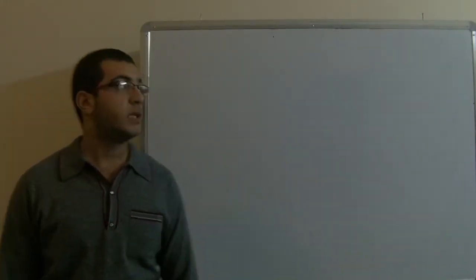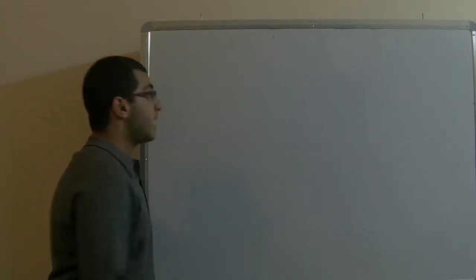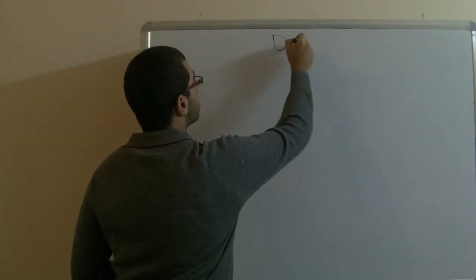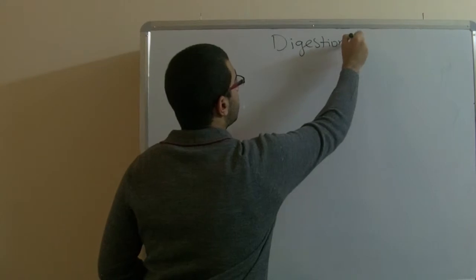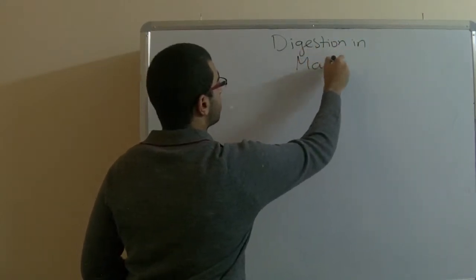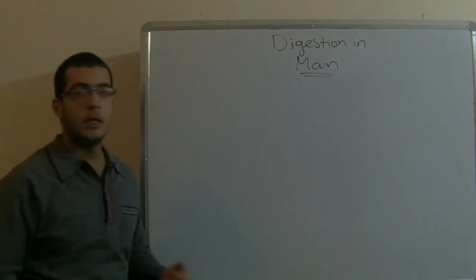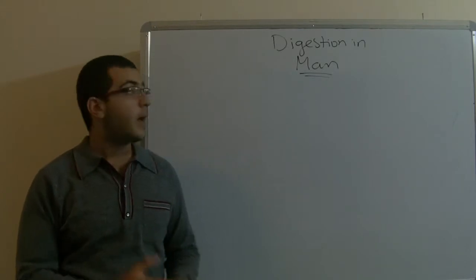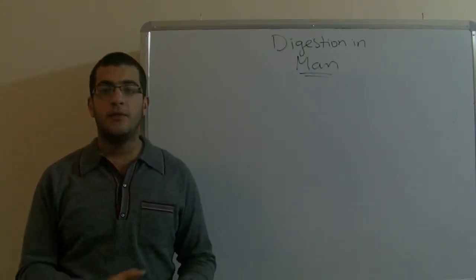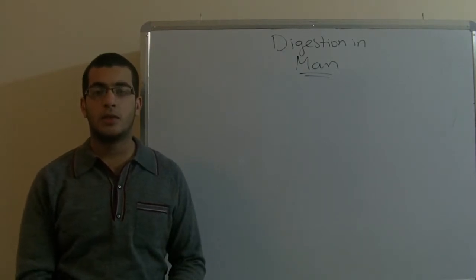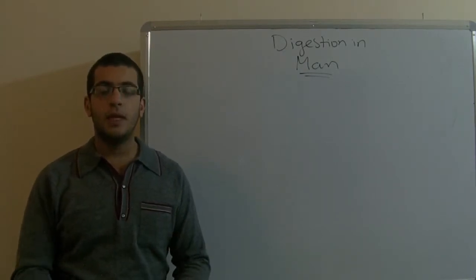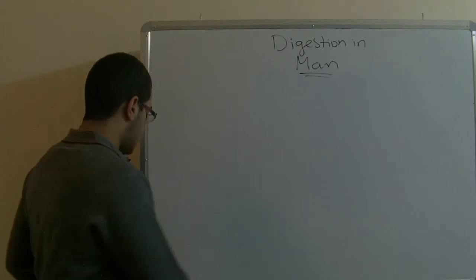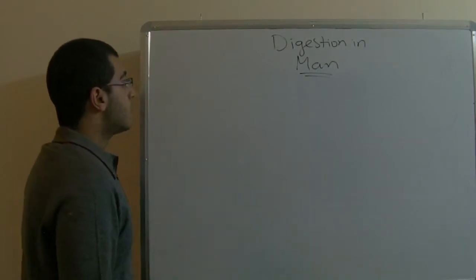Hello and welcome back. Last time we talked about enzymatic reactions, and today we will talk about the process of digestion in man. The digestion process begins from the mouth cavity, and the food descends through the esophagus to the stomach, through the small intestine, the large intestine, the anus, and then it's outside the body.